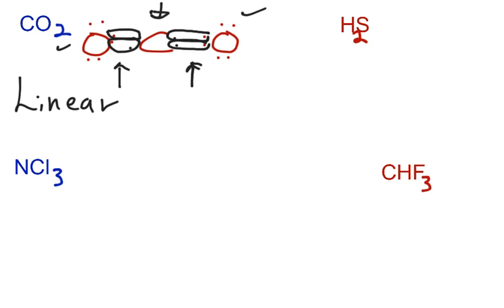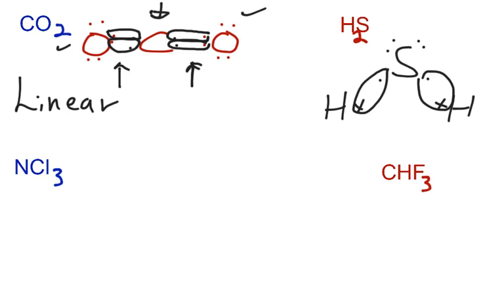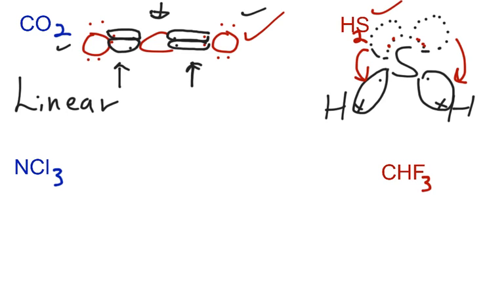Our next molecule is H2S. Hydrogen has one valence electron and sulfur has six. We link them up, and I draw it this way because I know from experience that these two electrons here and these two electrons here are unshared pairs on the central atom. What are they doing to the shared pairs? They are repelling them and pushing them down. So these unshared pairs repel the shared pairs, pushing them away. H2S, even though it has three atoms just like CO2, will not be linear — it has a bent shape. So CO2 is linear and H2S is bent.